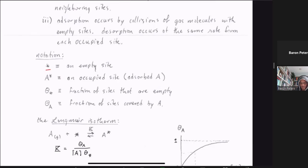Our Langmuir adsorption isotherm represents the equilibrium for the adsorption process: gas-phase molecules react with free sites to make A adsorbates. The first step is to write down the law of mass action for this reaction. The equilibrium constant at equilibrium equals the fraction of A adsorbate sites divided by the concentration of gas-phase A molecules and also divided by the fraction of free sites, theta_star.